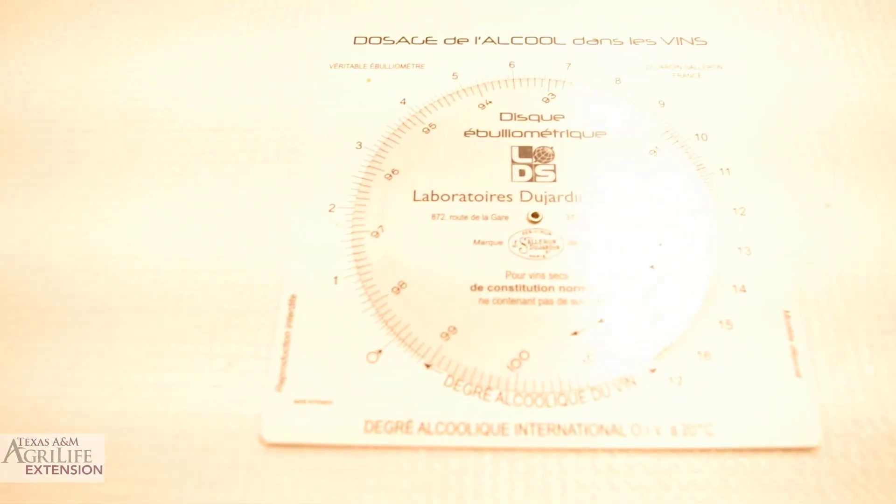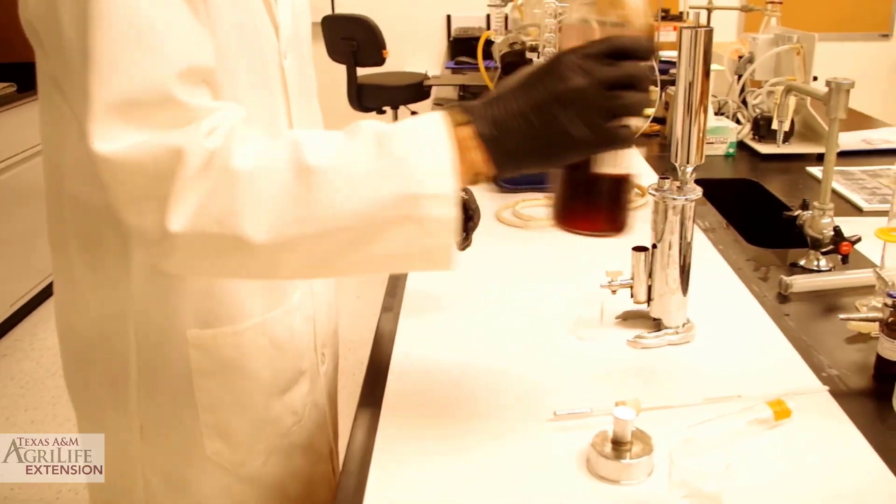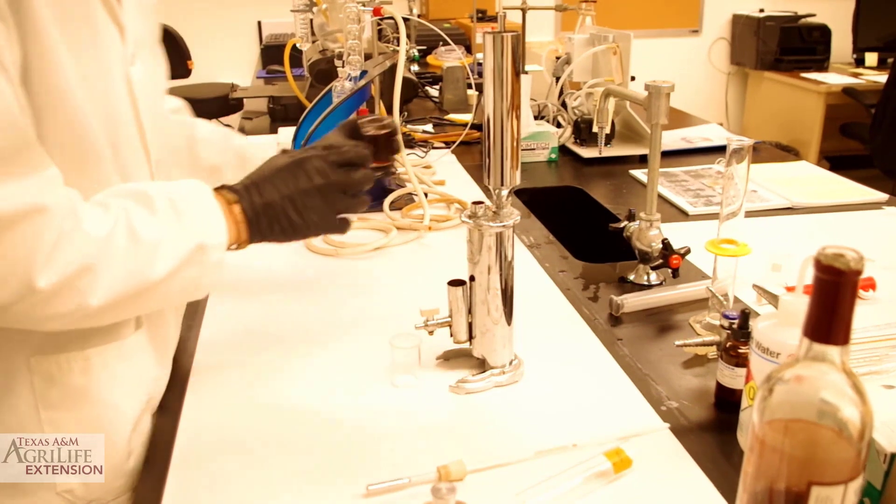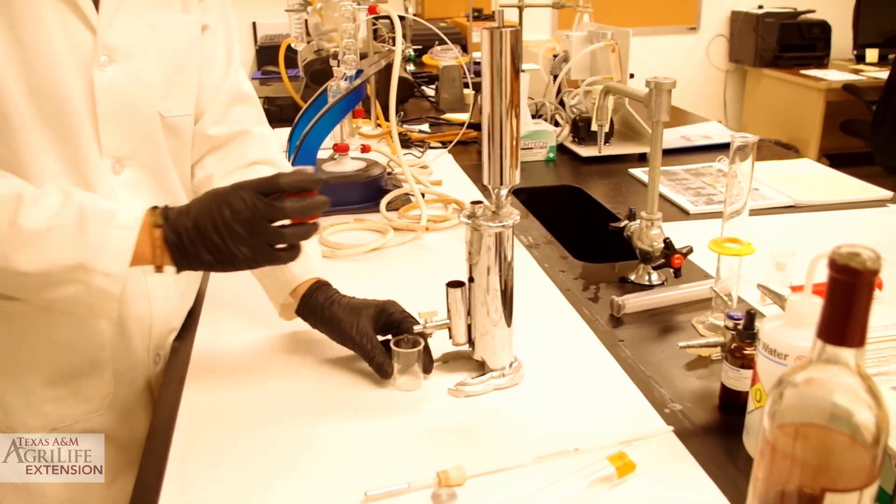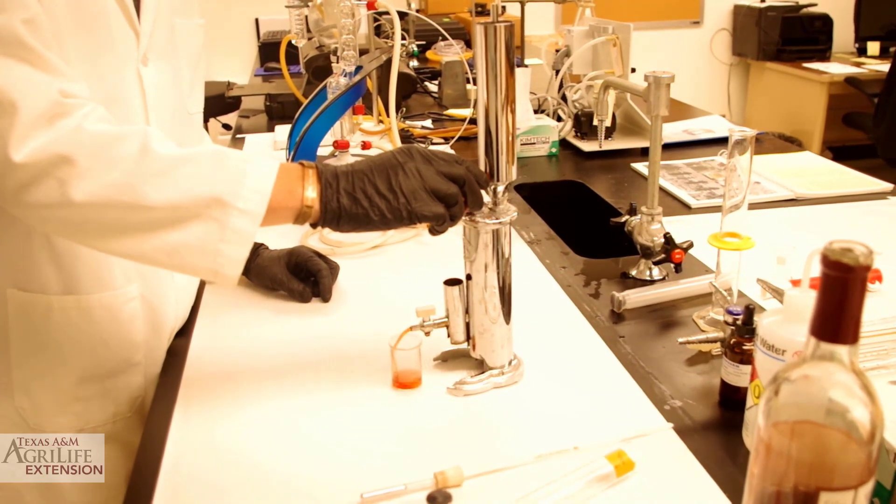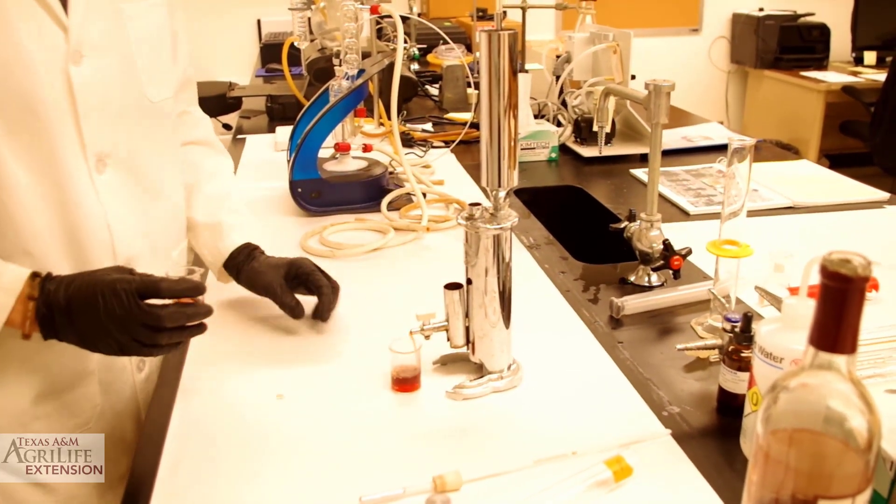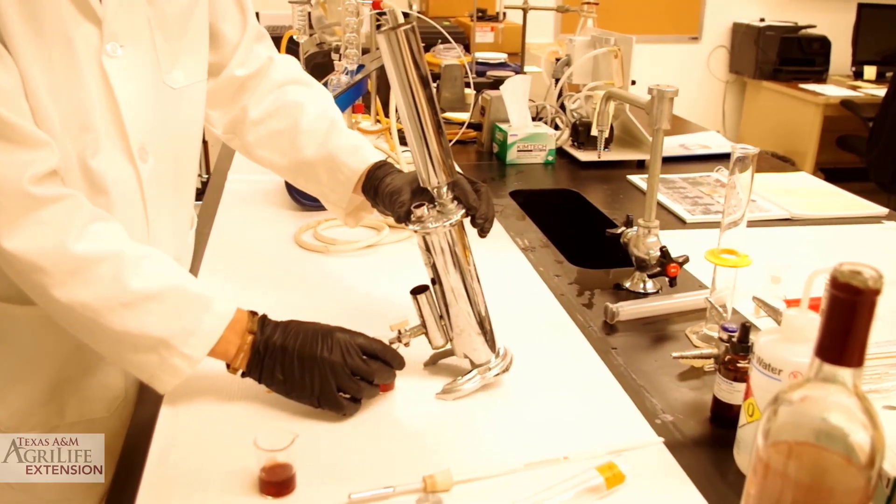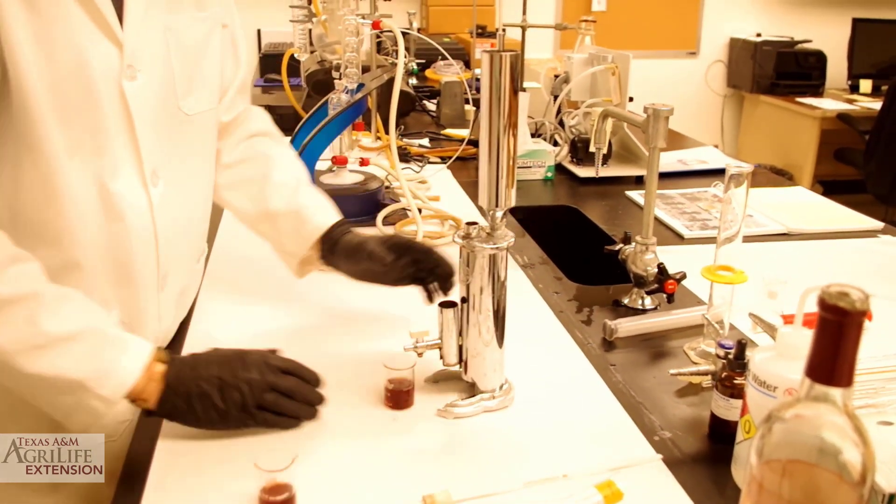We are now ready to run our first wine sample. First, we rinse our boiling chamber with a little bit of wine from our wine sample. Make sure you have a waste beaker placed underneath the spout and that the spout is open. Tilt your ebuliometer slightly forward so that the boiling chamber is completely drained.